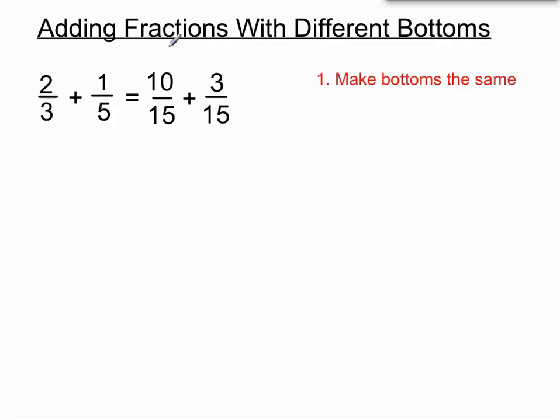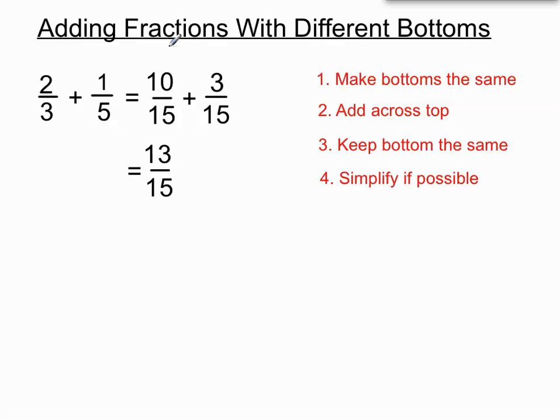And now we go through the process that we just described previously when we had the same bottoms. We add across the top, so 10 plus 3 is 13. And we keep the bottoms the same, 15. And just to check the last bit, we see if we can simplify. In this case we can't, so we'll leave it there. So when we haven't got the same bottoms to begin with, we make them into the same bottoms, and then we do the method for adding fractions with the same bottoms.